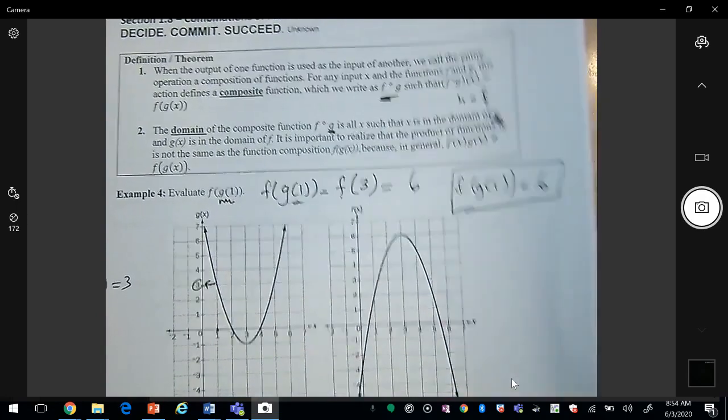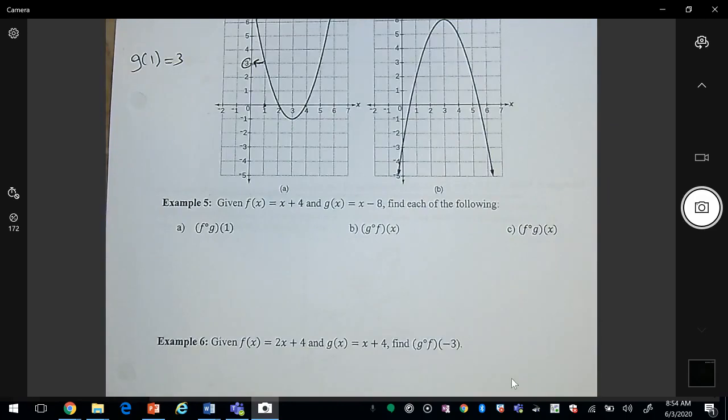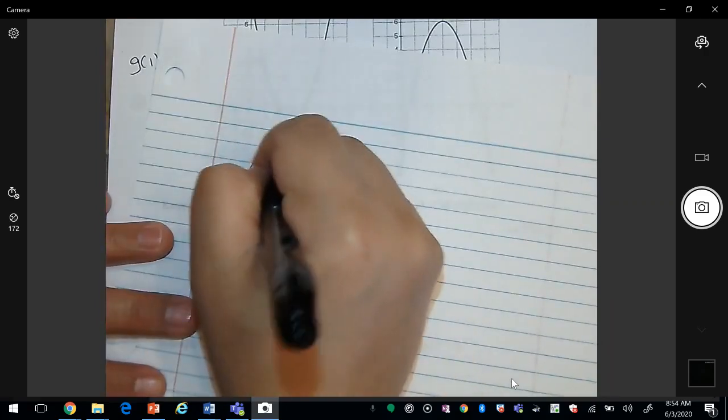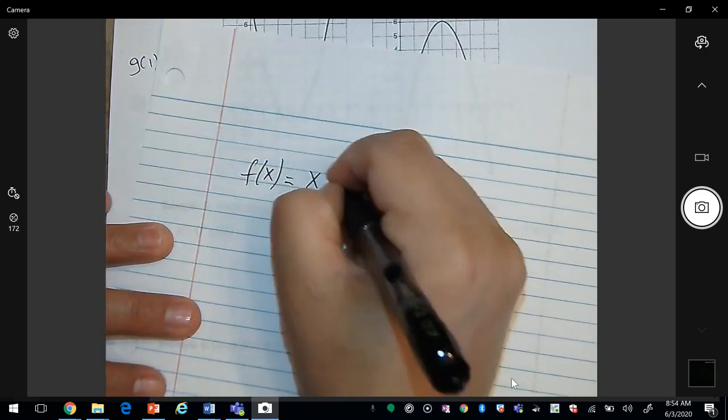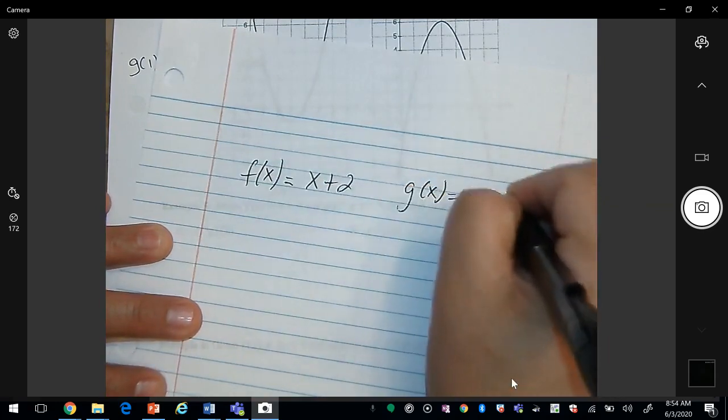Okay, so let's do some examples. So basically, let me draw a picture of what's going to happen. So let's say you have f of x is x plus 2, and g of x is x minus 3.